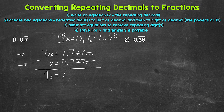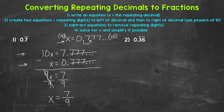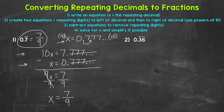Now we can move on to step 4: solve the equation for x and simplify if possible. We have 9x equals 7, so let's divide both sides by 9. On the left side we just have x, and on the right side we have 7 ninths, which is in simplest form. The only common factor between 7 and 9 is 1. So 0.7 repeating equals 7 ninths as a fraction.